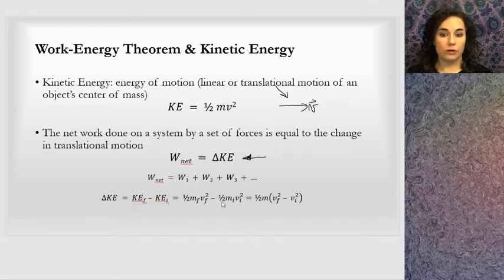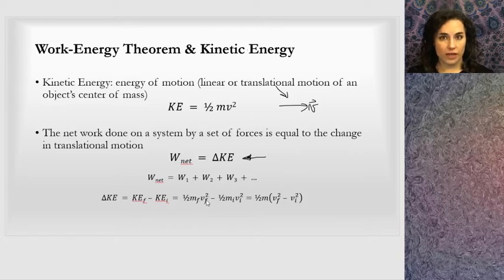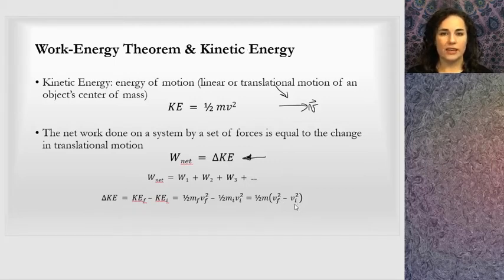To be explicit with the change in kinetic energy, we do final minus initial — change is always final minus initial. Typically the mass is the same, so you can think of the change in kinetic energy for a single object not changing mass as one-half m times v-final squared minus v-initial squared. That can make your calculations a little bit easier.